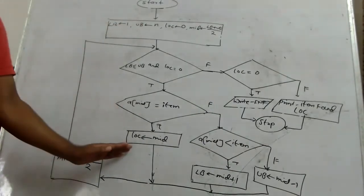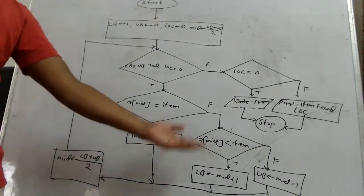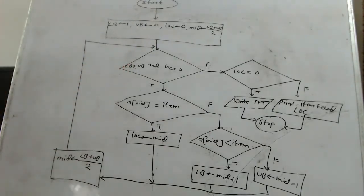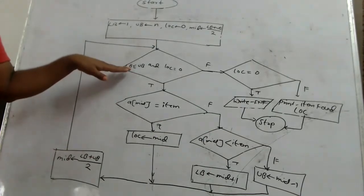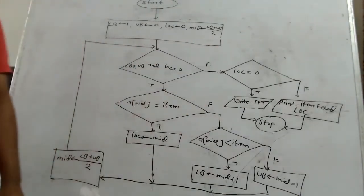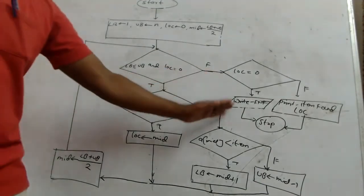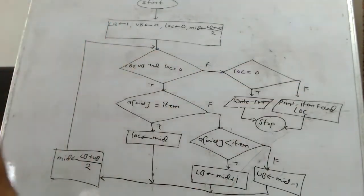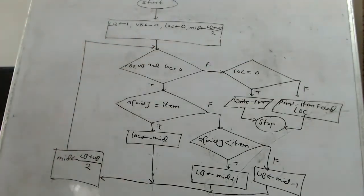जब यह condition true रहेगी तब loop चलता रहेगा, और जब lower bound और upper bound update होंगे इस तरीके से, lower bound और upper bound दोनों range को cross कर चुके होंगे — मतलब आपका item array में exist नहीं कर रहा। तो उस case में पहली condition false हो जाएगी। जब loop false होगा, उसके बाद check होगा कि search successful हुआ है या नहीं। Condition है: क्या LOC अभी भी 0 है? अगर true है — item find out नहीं हुआ — item not found print होगा और stop। अगर condition false है, LOC 0 नहीं है — item found at location LOC, LOC की value display करेंगे — और stop।